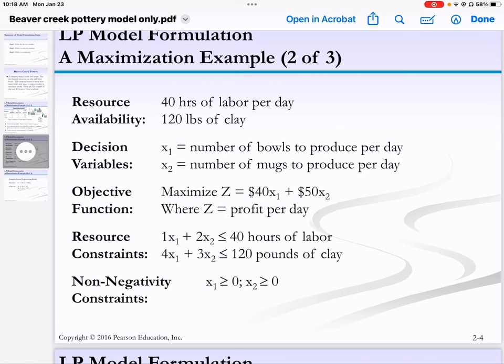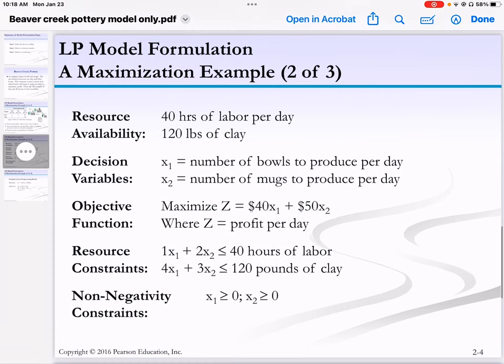So what resource do we have? 40 hours of labor per day, and we also have 120 pounds of clay. Let X1 be the number of bowls to make. X2 is the number of mugs to make.